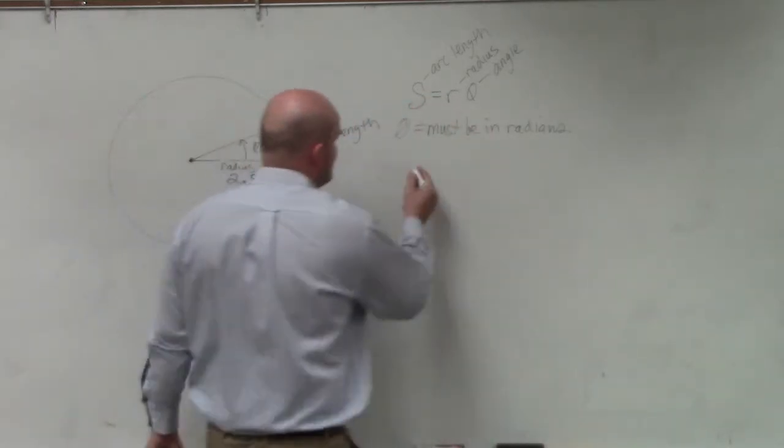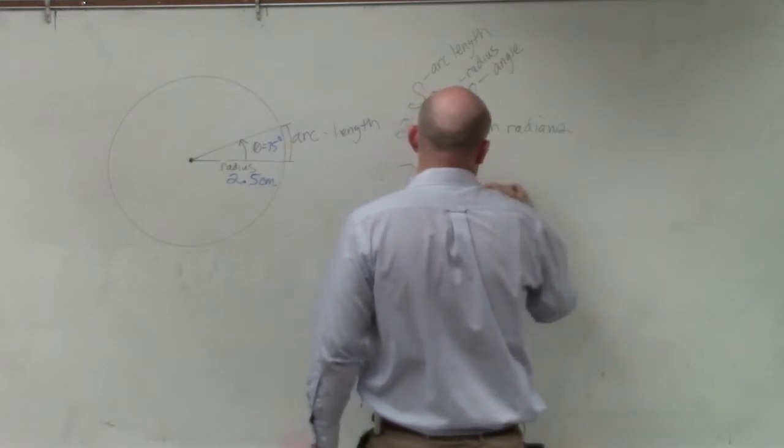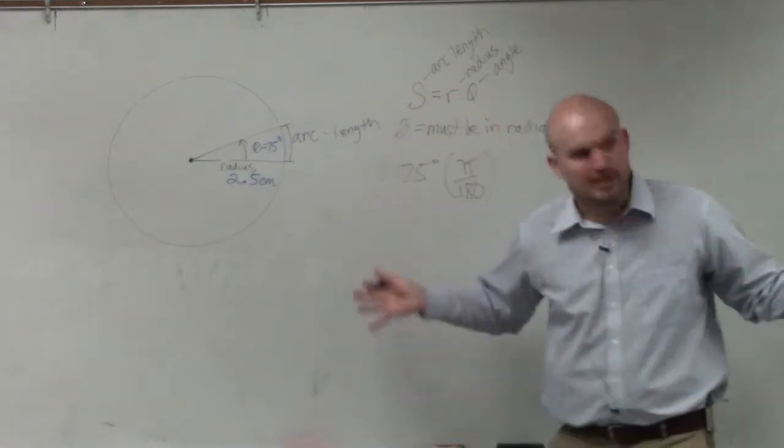So if you have 75 degrees, the first thing I'm going to do is 75 degrees times pi over 180. Boom, done. Right?